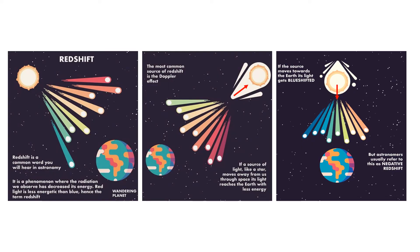This is a pictorial representation of redshift and blueshift. In the second image, the source of light is moving away from the Earth, so the light it emits reaches Earth with lesser energy — we say it has redshifted. In the third image, the source is moving towards the Earth, so the light reaches Earth with more intensity and energy — we say it has blueshifted. Astronomers also refer to blueshift as negative redshift.